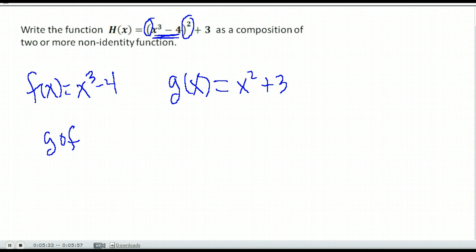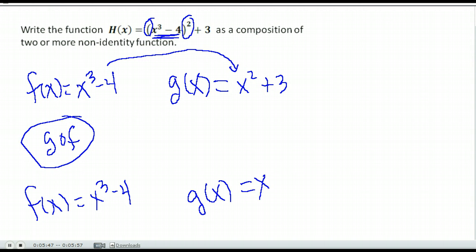Again, it's going to be g of f because we're taking g and replacing this value x with an x cubed minus 4. And our two functions are f of x equals x cubed minus 4, and g of x equals x squared plus 3. And that would be our answer.